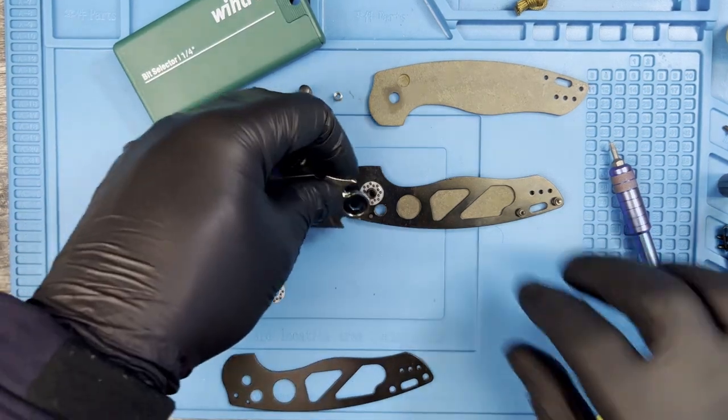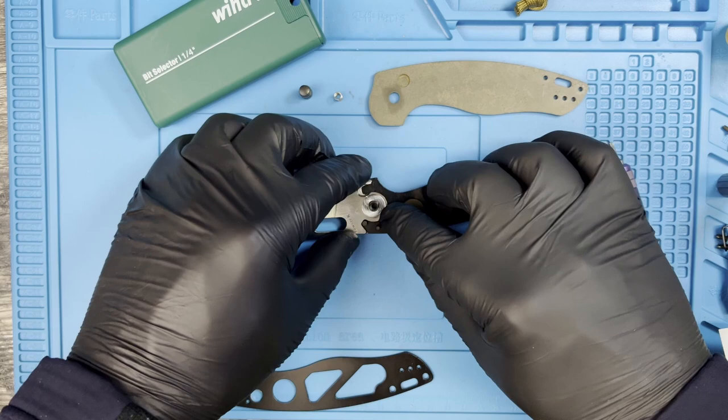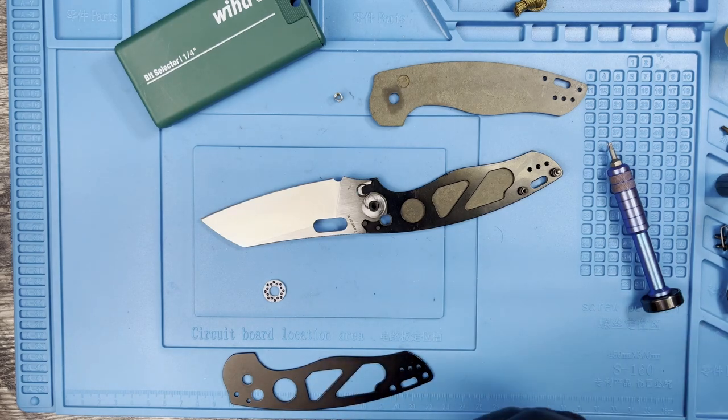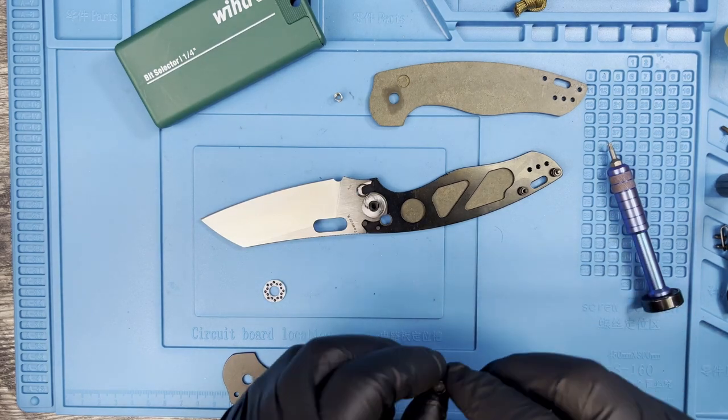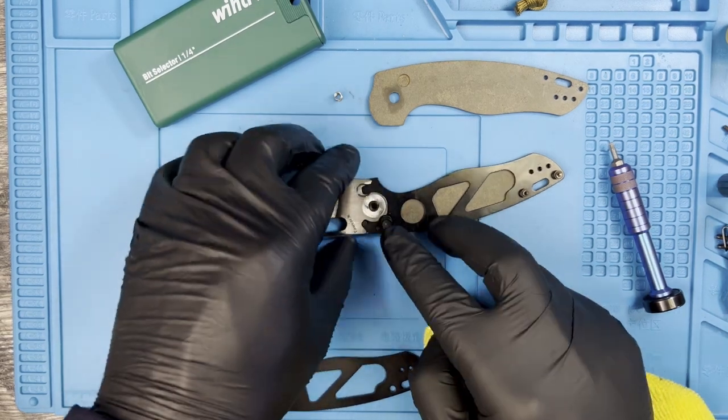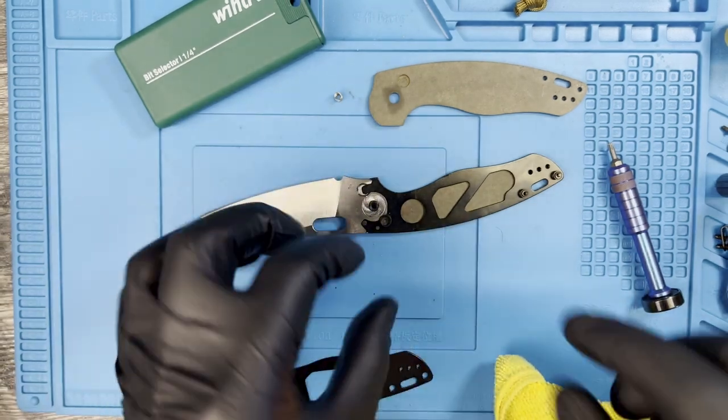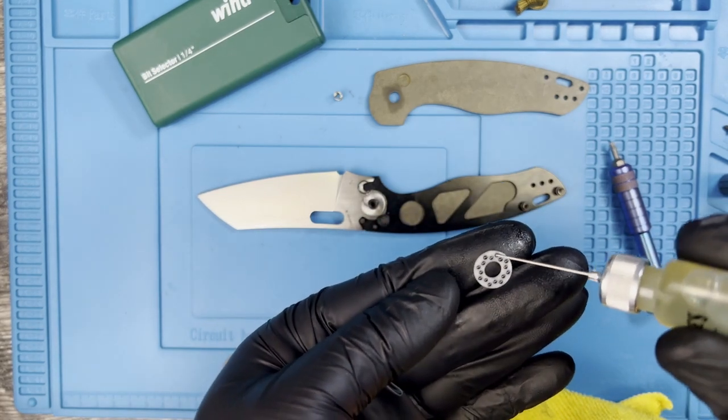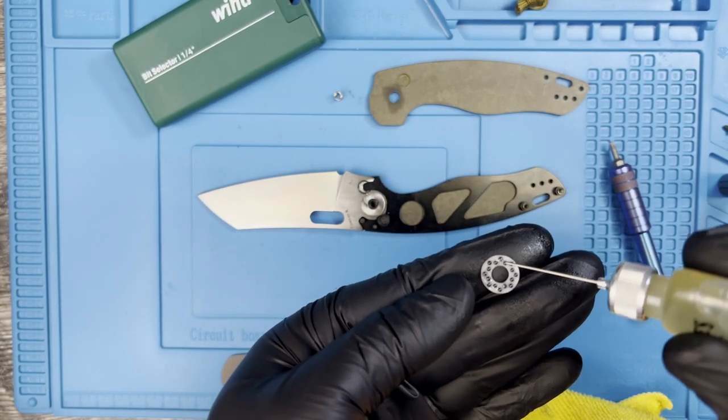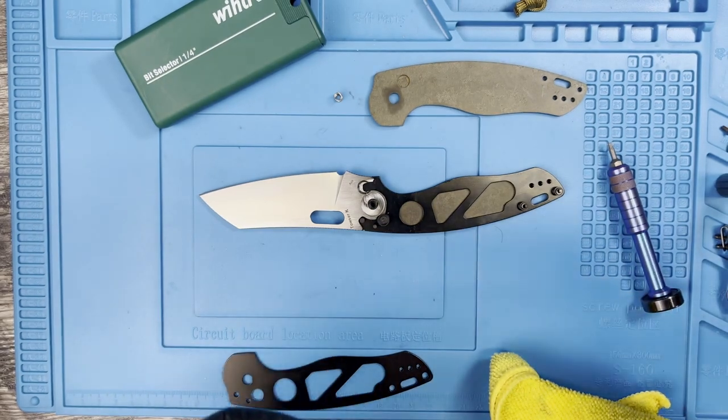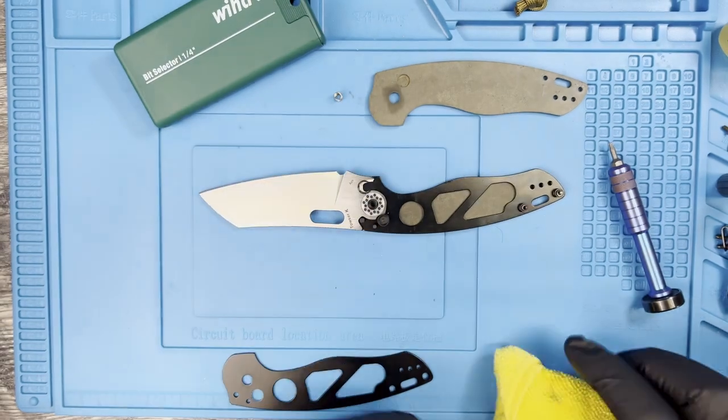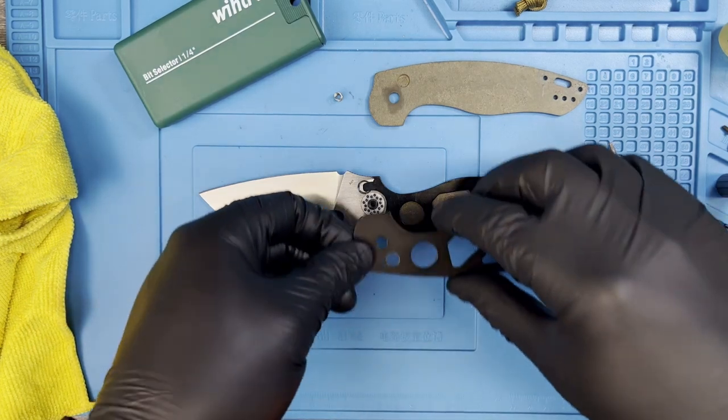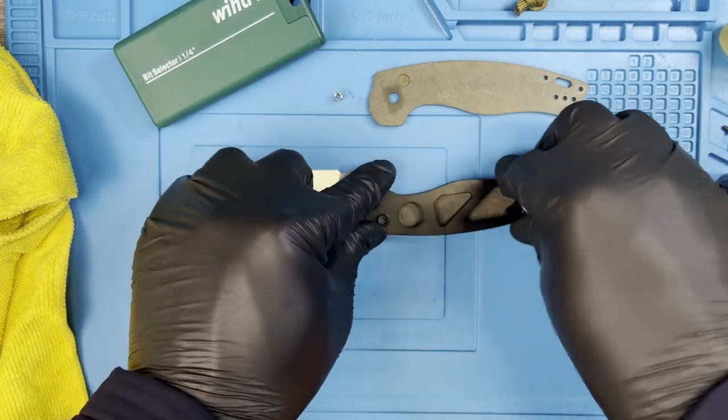So we'll go ahead and reinstall this blade on the pivot and we'll reinstall the button and make sure I don't have any oil on my fingers or on the button and that'll just drop right on in. There we go. I had to lift up on the blade just a little bit to get it to drop in there.